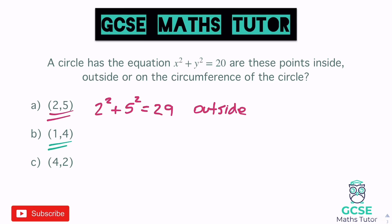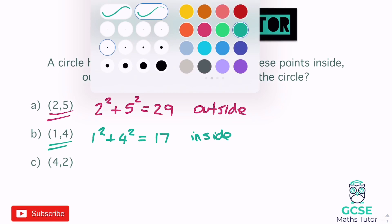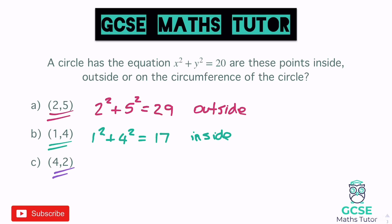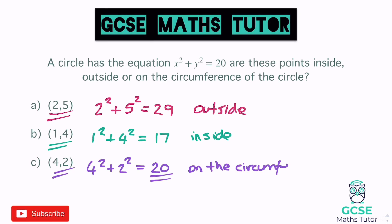For the next point (1, 4): 1 squared plus 4 squared is 1 plus 16, which is 17. That's less than 20, so it's on the inside of the circle. Those coordinates are not big enough to equal the 20 that dictates whether it's on the circumference. Moving on to the last one, (4, 2): 4 squared plus 2 squared is 16 plus 4, which equals 20. So that point is on the circumference.